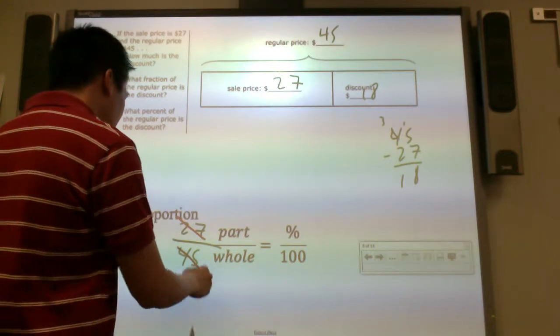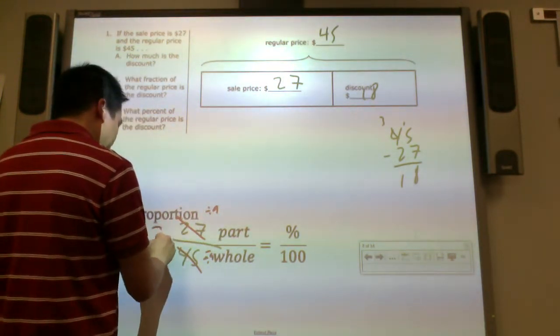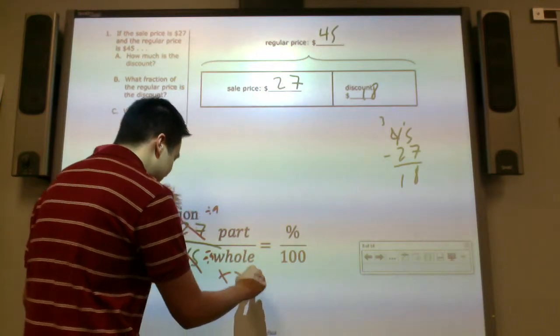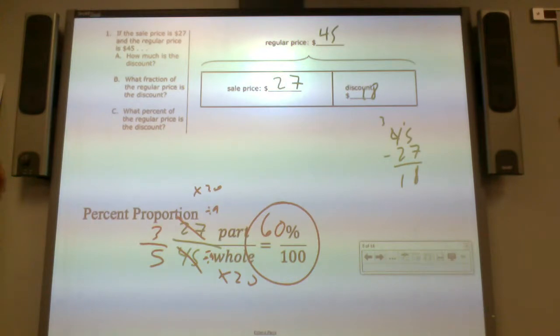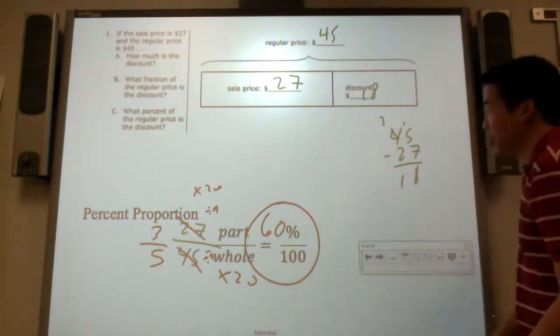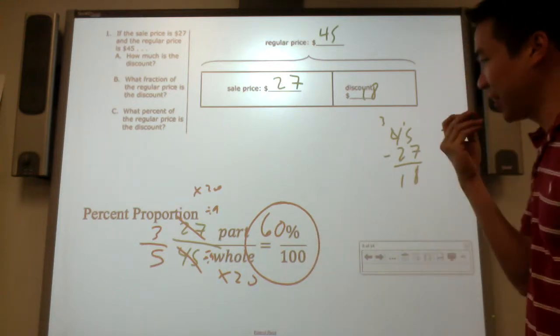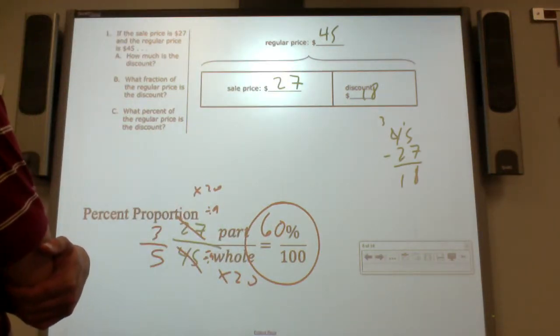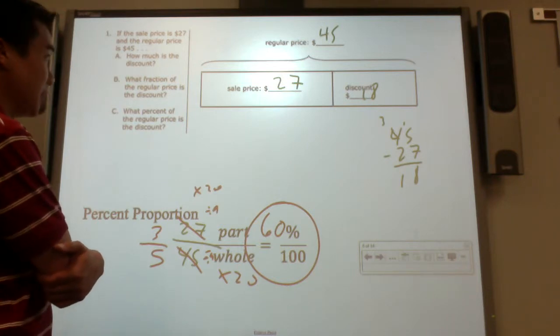Part of the price is $27. I need to find the percent. Can $45 be built up to $100? It can be, but let's see if we can break this down and use easier numbers. Divide both numbers by 9. I get 3 over 5. Can $5 be built up to $100 by 20? By 20, 60%. If something costs $45 and you save, discount it's $18, you save 60% of it. Is this correct? I feel like it's not correct. I don't know why it's not correct.